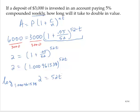Let's use the change of base rule. Log 2 over log 1.000961538 equals 52t. And I can isolate t now by dividing through both sides of the equation by 52.